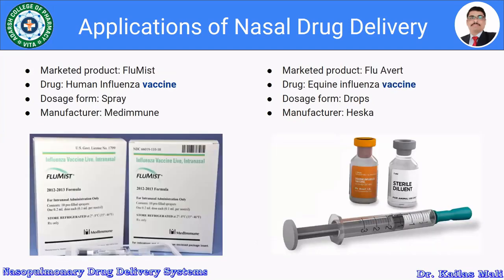The next marketed product is Flumist, which contains the human influenza vaccine. It is available in spray form and is developed by MedImmune. This is the Flumist product. The next product is Fluvac.